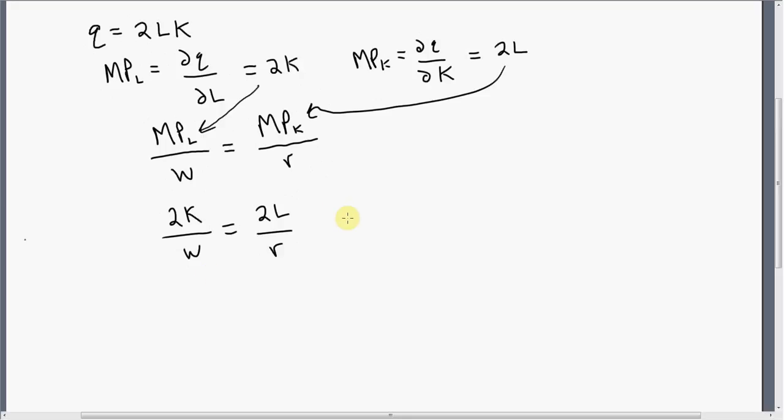Now we're going to simplify this. We're going to solve for K. And this equation, after we solve for K, will represent the long run expansion path. So the 2's cancel. Multiplying everything through by w. This is our long run expansion path.